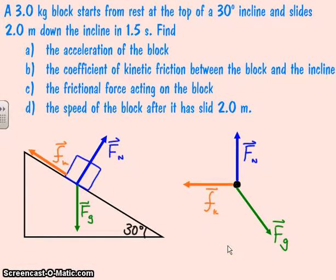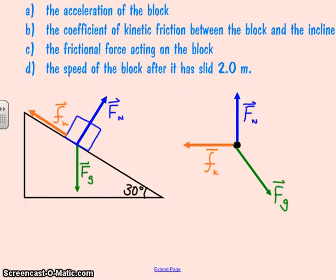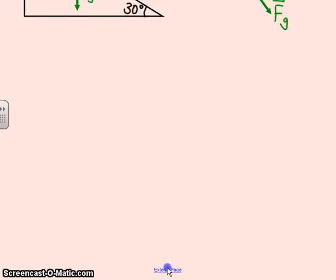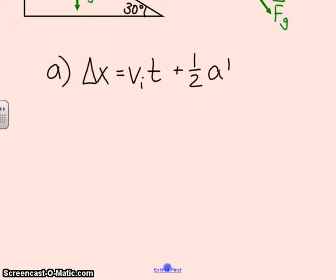Looking at part A, I want to find the acceleration of the block. For part A, this is actually just a one-dimensional motion problem. We know that it starts from rest, so the initial velocity is zero. We know it has a displacement of 2 meters in a time of 1.5 seconds. The best equation to use is delta x equals v_i t plus 1/2 a t squared.